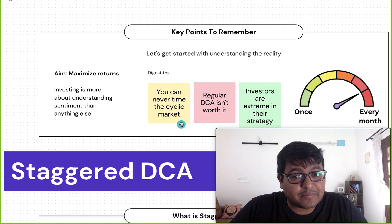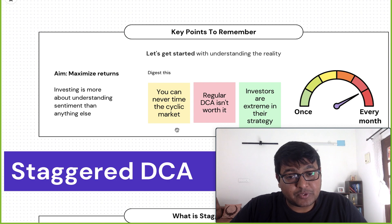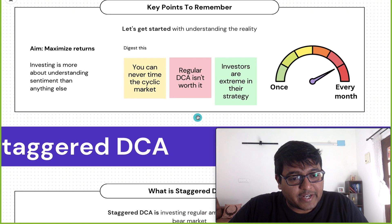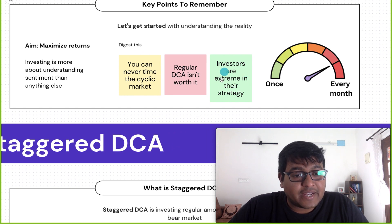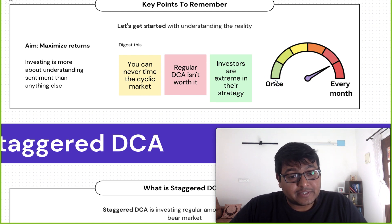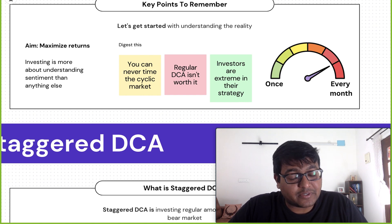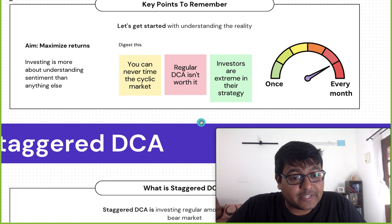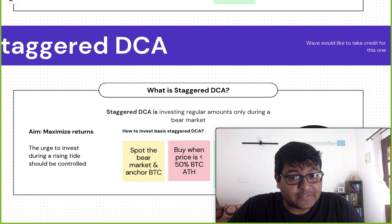There are three things you should really digest. One: you can never ever time the market correctly — it is impossible. Two: regular DCA simply isn't worth it, as we just saw. If you're a beginner, fine, but once you move ahead, you should not be doing regular DCA. Three: investors are very extreme in their strategy — somebody puts in $20,000 today and doesn't buy anything for the next three years, or someone invests $1,000 every single month regardless of price. These are extreme strategies that give optimal results, not extraordinary results. That's where staggered DCA really makes sense.